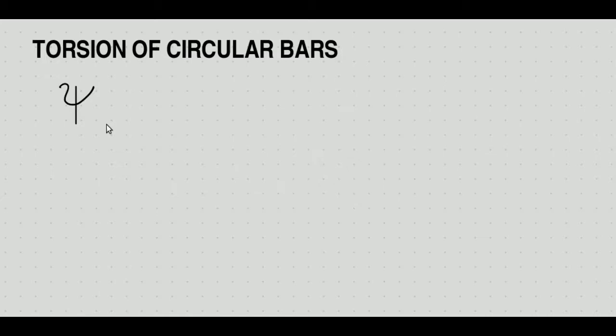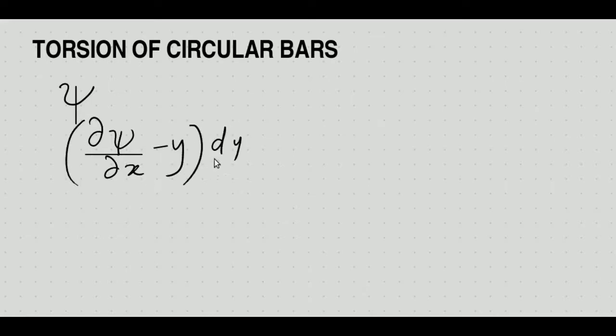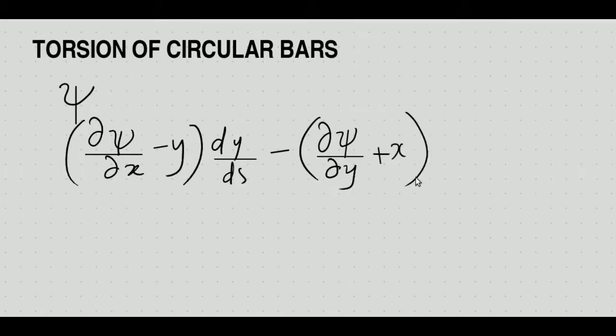In this session, we will try to obtain an exact solution for the problem of circular bars under torsion using St. Venant's method. St. Venant formulated the problem of torsion of a prismatic bar as a problem of finding a harmonic function which satisfies a boundary condition in the form: ∂ψ/∂x minus y into dy/ds minus ∂ψ/∂y plus x into dx/ds equals zero.